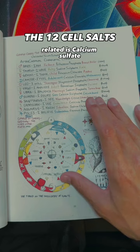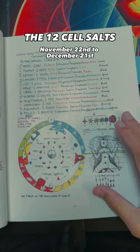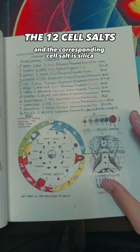November 22nd to December 21st belongs to Sagittarius, which is the hips and represents the knowledgeable stages and the corresponding cell salt is silica, which can be found in strawberries.